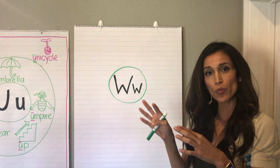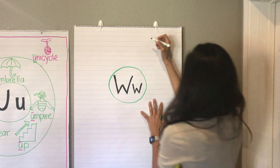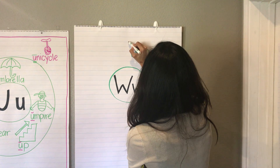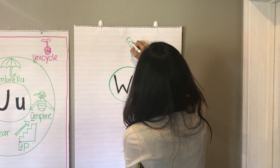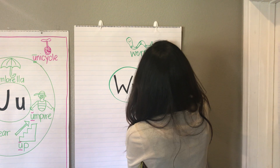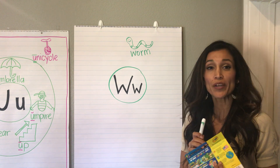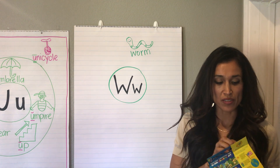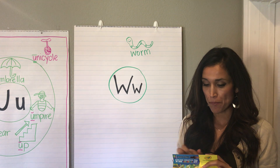So we're going to start our brainstorm with, of course, our alpha friend, which is a worm. We're going to add that right away. And all of our words have that W sound. I know that you are doing your brainstorm along with me and that you're going to finish it with as many words that have the W sound as you can think of.